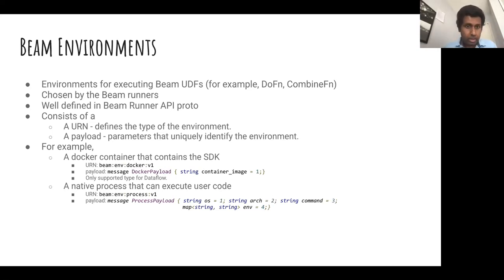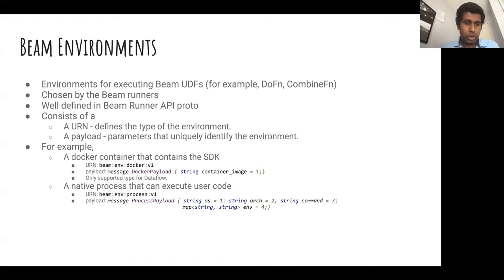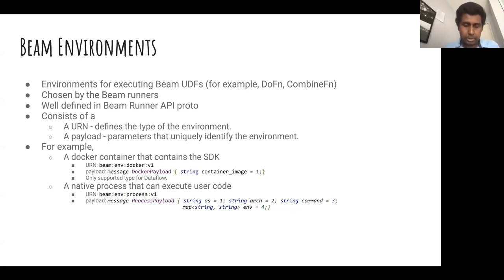So I mentioned environment — what's an environment? In Beam's perspective, an environment is somewhere you can use to execute Beam UDFs, things like Beam DoFns or CombineFns. Environments are chosen by Beam Runners and are well defined in the standard Beam Runner API definition. An environment usually consists of a URN, which defines the type of the environment, and a payload, which defines parameters that uniquely identify the environment. An example is a Docker environment — a Docker container represented by a well-defined URN, with a payload that has one property: the container image.